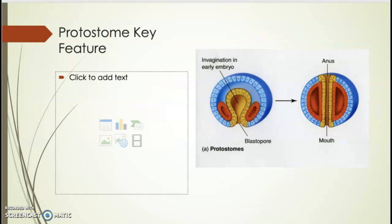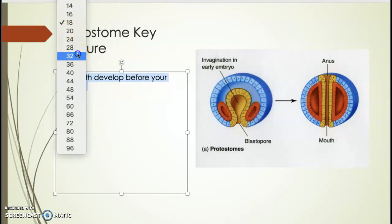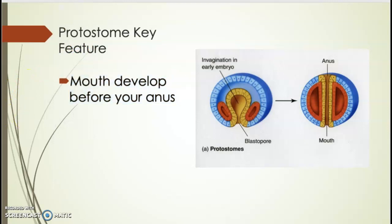To be a protostome, the key feature is that the mouth develops before the anus. Remember, protostome is not a classification level — it is an organizational level. As the blastopore develops and indents inward, it becomes the mouth; it continues to indent and eventually forms the anus, giving a complete digestive tract with a mouth on one side and anus on the other.